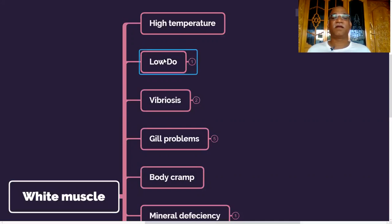Another major reason for white muscle is low dissolved oxygen. So if you have low dissolved oxygen stress today, maybe next 2-3 days, you will find white muscle shrimps in your pond.